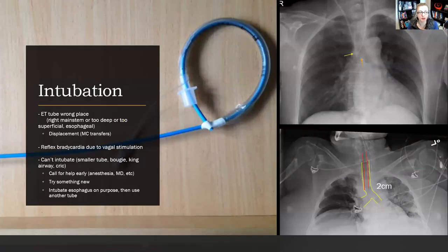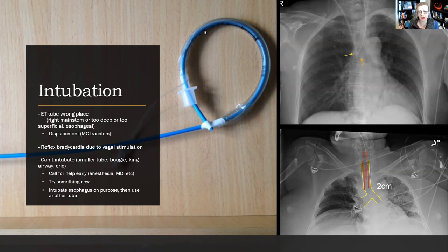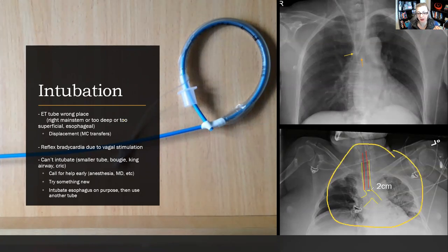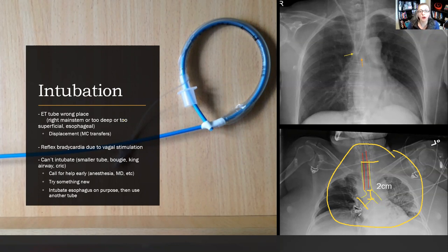Let's move on to intubation. Intubation can go wrong in many ways. Once you place the tube, when you get your chest x-ray, you're looking for placement about two centimeters above the carina — that's appropriate placement. If it's a little off, that's okay, but if it's way too high or too low, you'll need to move that tube — usually respiratory does that, but you need to know how. This picture shows right main stemming, where almost all air goes into one lung and almost none to the other.